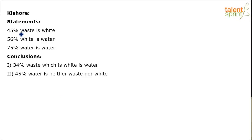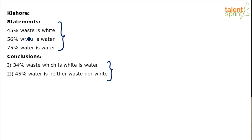This question from syllogisms has three statements and two conclusions, and our job is to identify which conclusions logically follow. The statements are: 45% waste is white, 56% white is water, 75% water is water. So what are these percentages about?